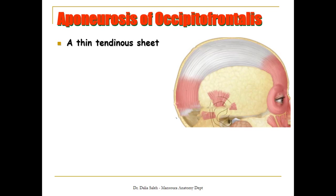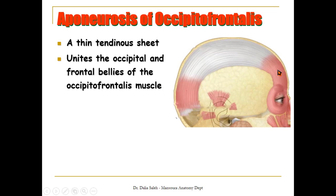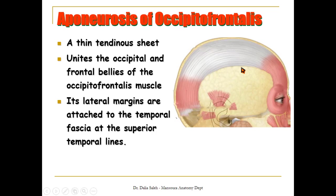The third layer is the aponeurosis of the occipitofrontalis muscle. It is a thin tendinous sheet. It unites both the frontal belly and the occipital belly of the occipitofrontalis muscle together. On the lateral side, it is attached to the temporal fascia, or the fascia over the temporalis muscle — the muscle filling this region of the skull which is called the temple, or the side of the skull.